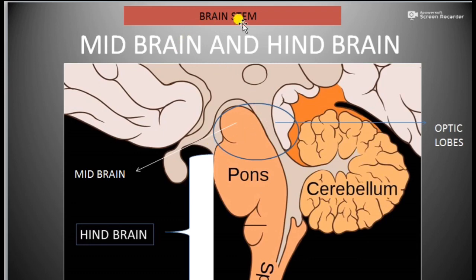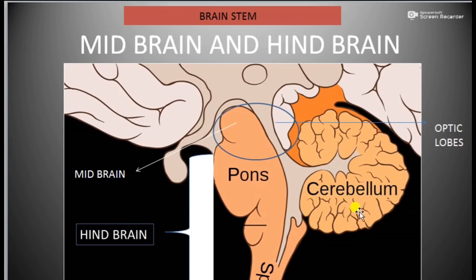The midbrain and hindbrain together form the brainstem, which constitutes only 20% of the brain; 80% is formed by the forebrain. The outer region of the cerebellum is grey in color due to the neural cell bodies of neurons, while the inner region is white matter containing myelinated axons.